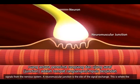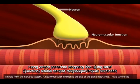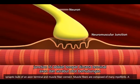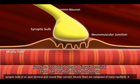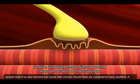A neuromuscular junction is the site of the signal exchange. This is where the synaptic bulb of an axon terminal and muscle fiber connect.